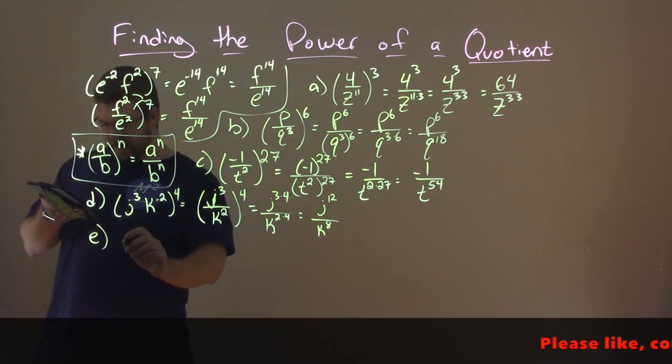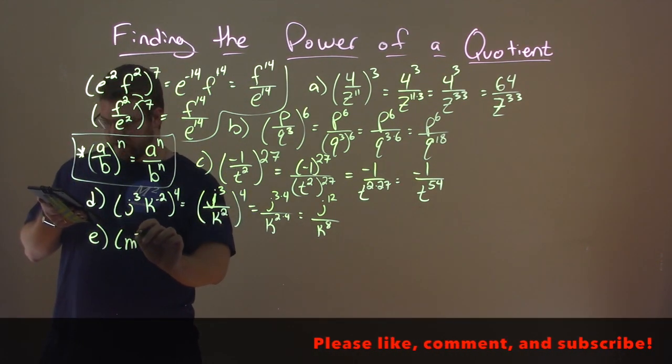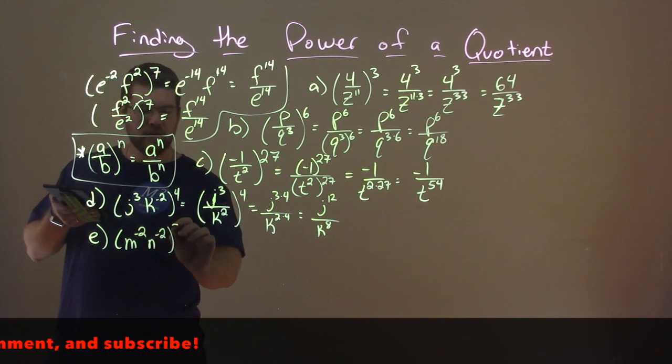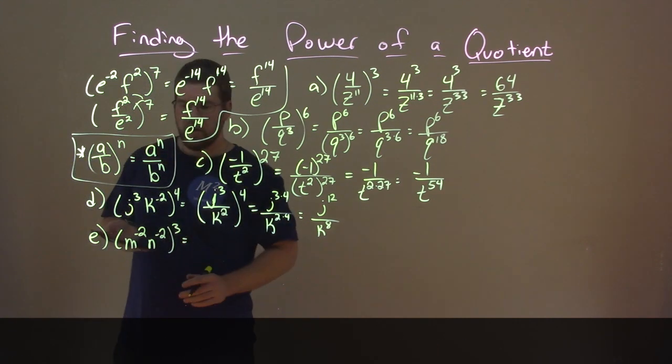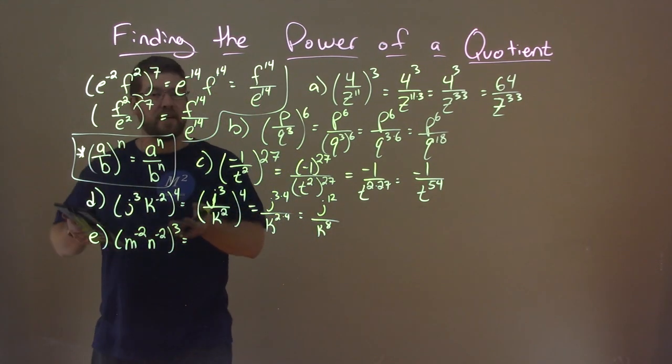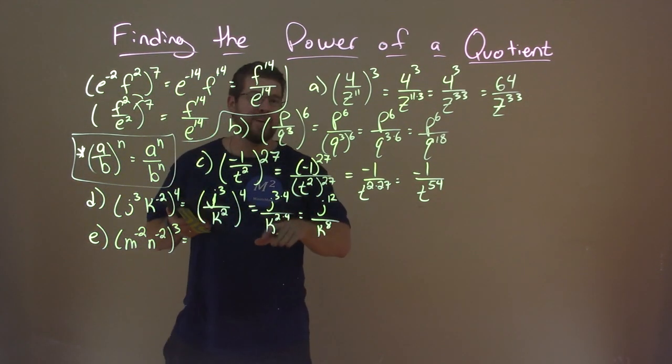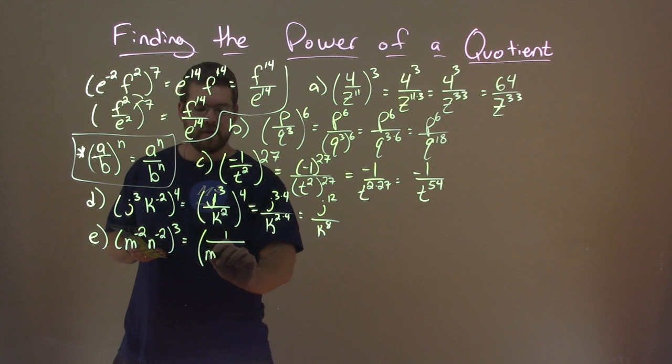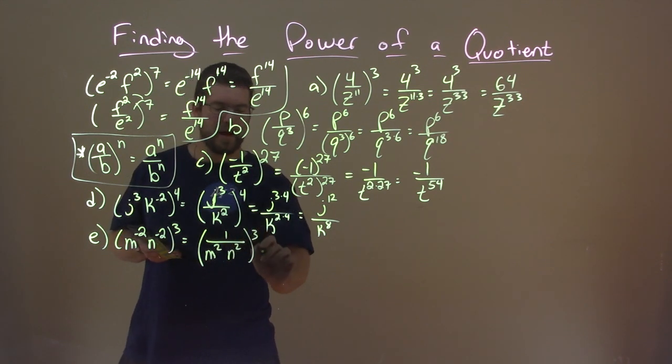We have one more for you. E. E is m to the negative 2 power, n to the negative 2 power, all to the 3rd power. Well, we have negative exponents already there inside the parentheses. We know we need to bring that down to the denominator. So let's do that first. So now we have big parentheses, 1 over m squared, n squared, all to the 3rd power.